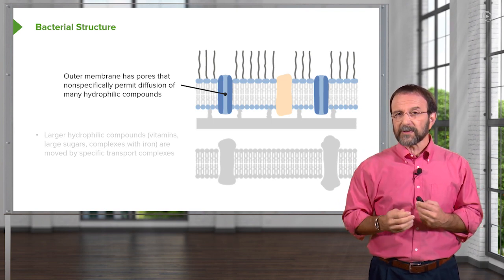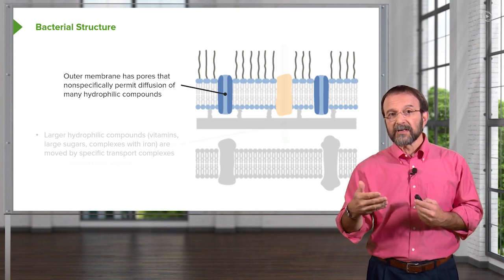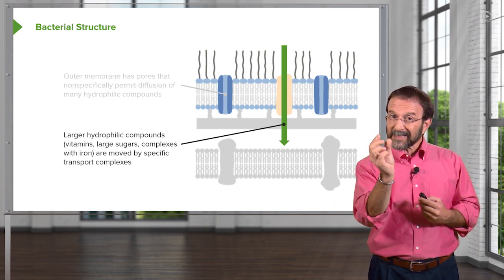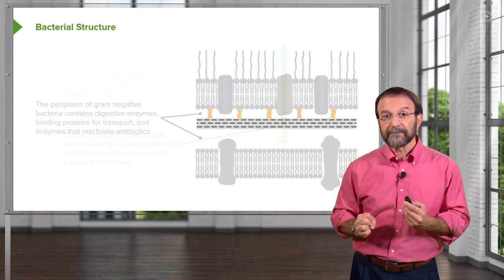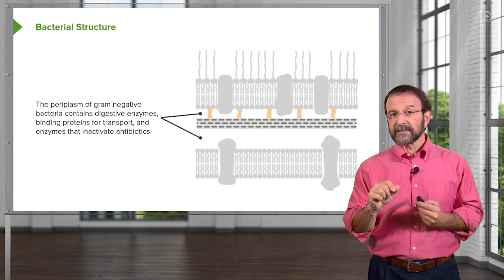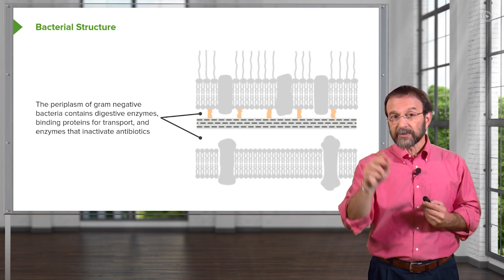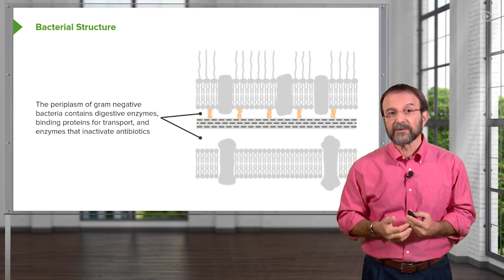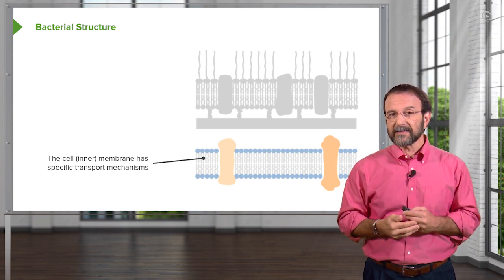The outer membrane has pores in it that allow small hydrophilic compounds to diffuse through. But bacteria also need larger hydrophilic compounds like vitamins, larger sugars, or materials complexed with iron. These get moved through proteins embedded in the membrane — transport complexes that can grab a compound on the outside and pull it into the cell. This brings molecules to the periplasmic spaces. In gram-negative bacteria there are two: one between the murein and the inner cell membrane, and one between the murein and the outer cell membrane. These periplasmic spaces contain enzymes that digest material as it comes through. The inner cell membrane also has transport mechanisms to move materials into the cytosol.